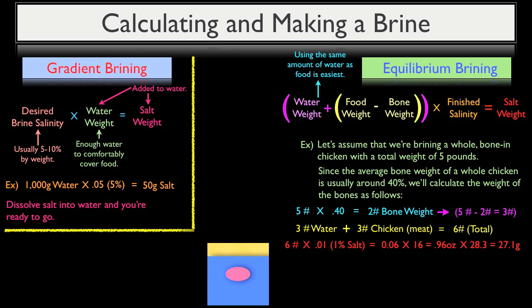Now, like I mentioned in our previous video, when we outlined the equilibrium brining method, the salt is dissolved into the water and readings with a salinity meter are taken until the brine's salinity reaches the desired salt percentage. So when I initially dissolve the salt into the water, the water will contain 2% salt because it hasn't had any time to diffuse into the chicken flesh.